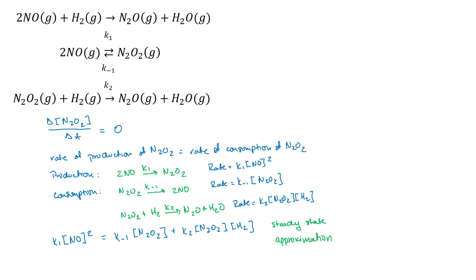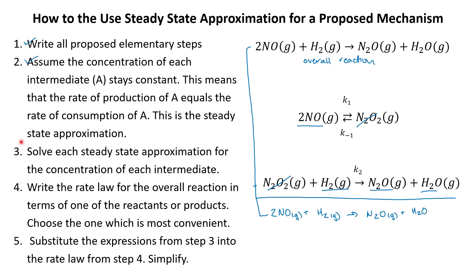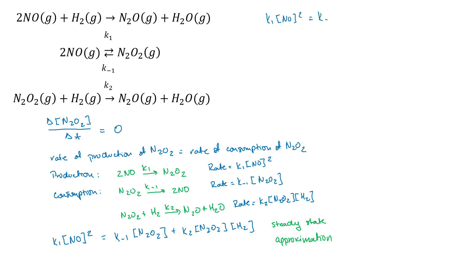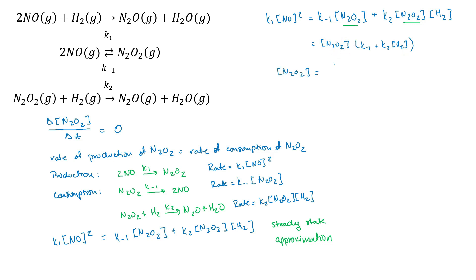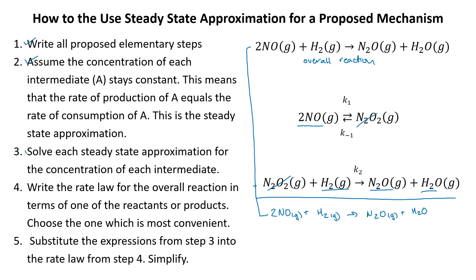Now on to step three: solving the steady state approximation for the concentration of the intermediate — time for some algebra. I'll rewrite the steady state approximation and isolate the concentration of N2O2 on the left-hand side. Since N2O2 is a common term on the right-hand side, I factor it out, then divide both sides by that quantity. The resulting expression for N2O2 isn't the prettiest, but step three is now complete.